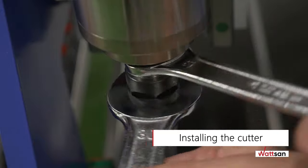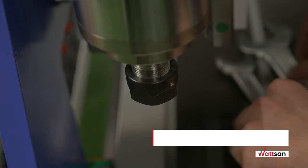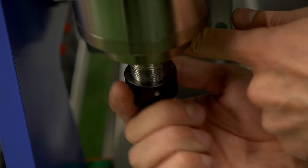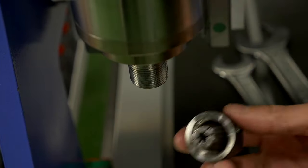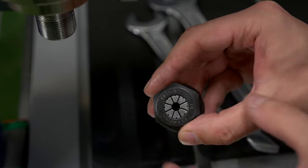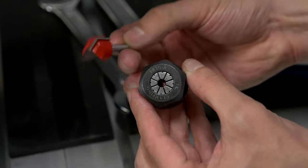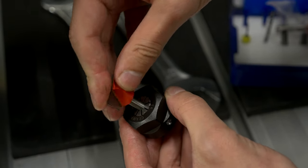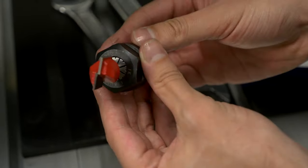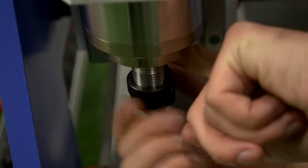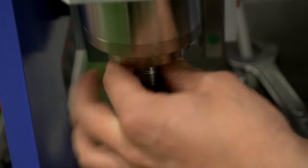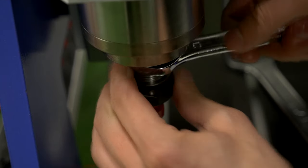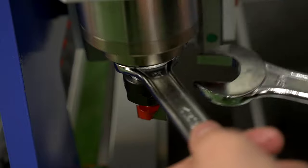Installing the cutter. Loosen the spindle nut with the spanner. Put the cutter into the nut and collet. Screw the nut with the cutter onto the spindle and tighten it with the spanner.